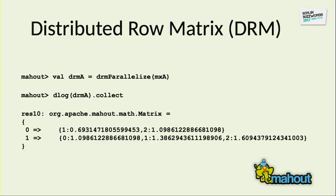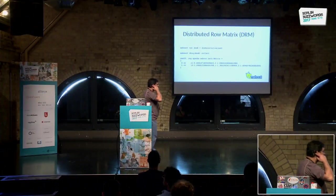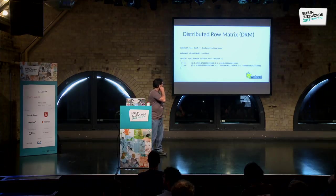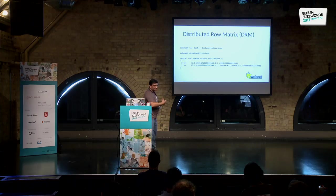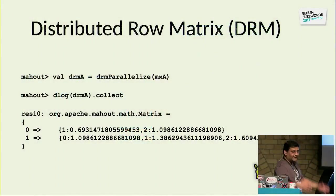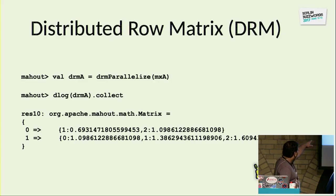The distributed row matrix is what we use for writing algorithms and making them scalable across clusters. You can read an in-memory matrix and parallelize it — create a DRM from it — by calling the drmParallelize function. You can then run a log on the DRM and do a collect, which aggregates results and brings them back to the main driver.